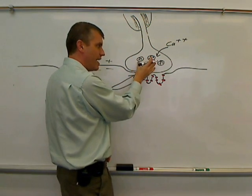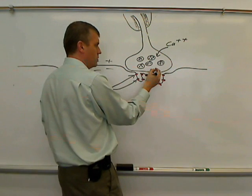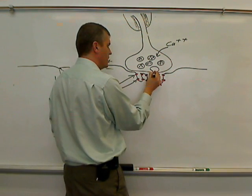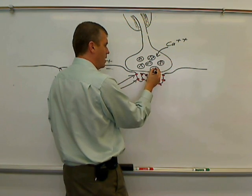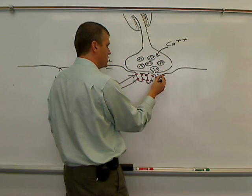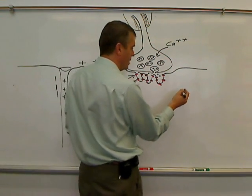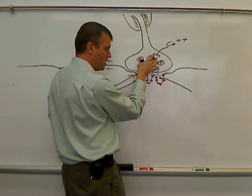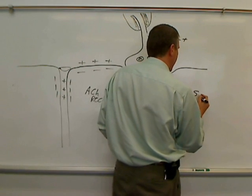When the level of calcium increases inside of the axon terminal, that causes these vesicles that are filled with neurotransmitter to come down here to the membrane and undergo exocytosis and release neurotransmitter into the synaptic cleft. That's one of the things I didn't label earlier, is this area between the nerve cell and the muscle cell. It's called the synaptic cleft.